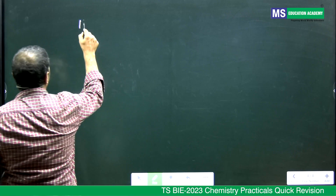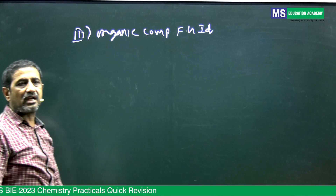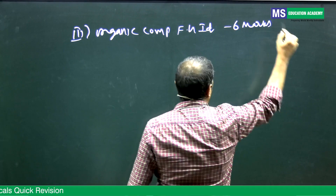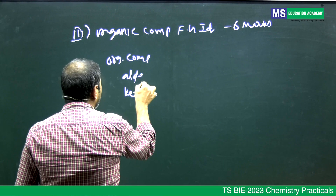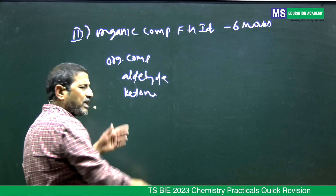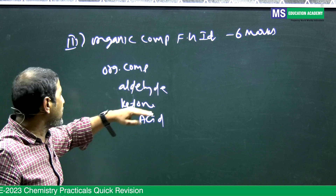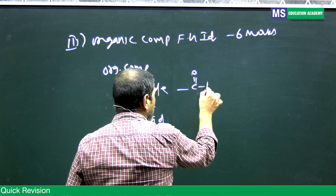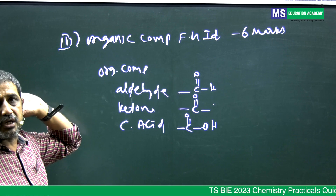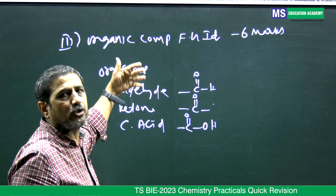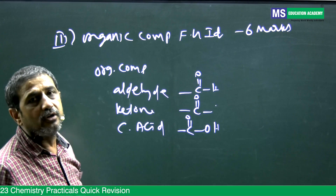The third question is organic compound functional group identification, for 6 marks. They will provide an organic compound — it may be an aldehyde, a ketone, a carboxylic acid, or other types. You perform different tests on the given compound and identify whether the functional group is an aldehyde, ketone, or carboxylic acid. Based on your tests, you report the functional group and get 6 marks.